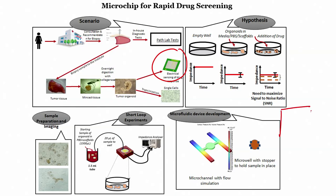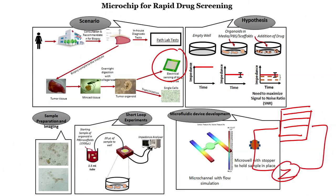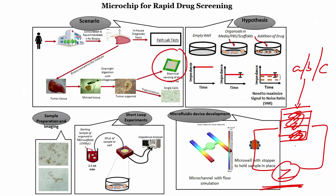If we create interdigitated electrodes and place the tissue or spheroid on them, we will get an impedance value. If we then load drug A, B, or C, and the drug is effective, the tumor will start dying. When it starts dying, conductivity increases and impedance decreases. This is one way of testing drugs A, B, or C.